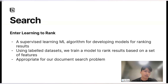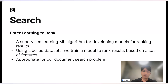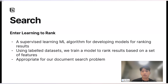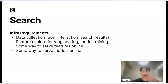So we decided to introduce a proven industry solution called Learning to Rank. It's basically a supervised learning algorithm that helps us develop models for ranking results. By providing it labeled datasets, we can train a model that will understand and use the features provided to intelligently rank the results. This meets our needs because it lets us iterate and add features while learning their importance in an automated way, and it's able to capture more complex relationships as a machine learning model.